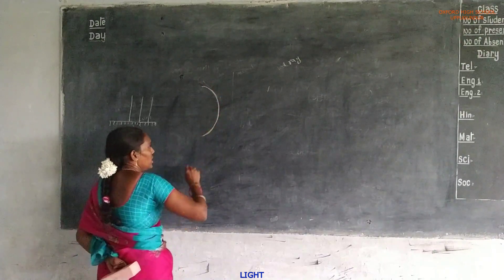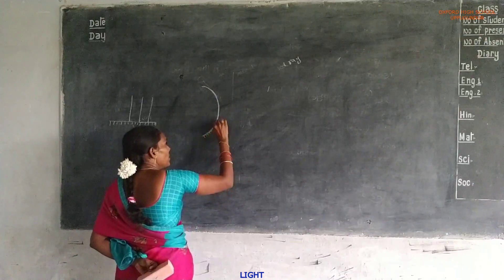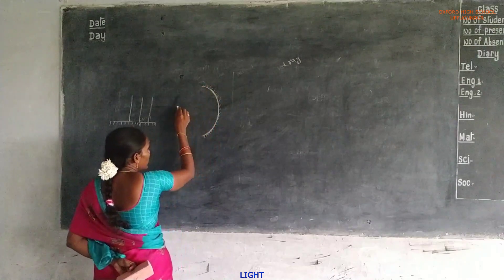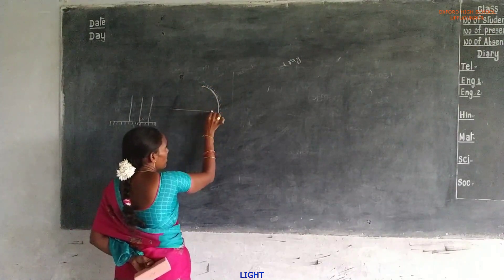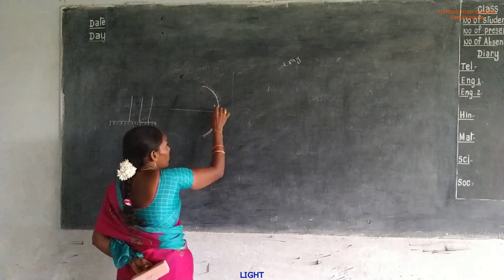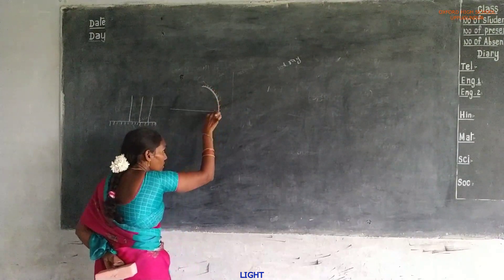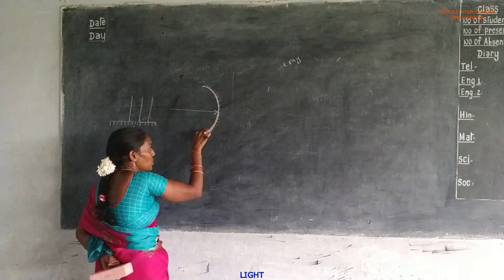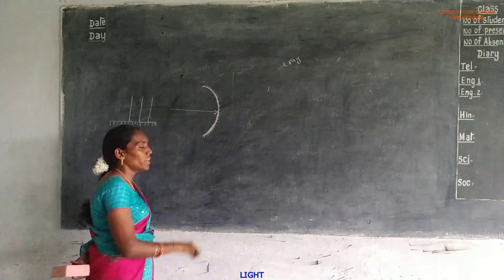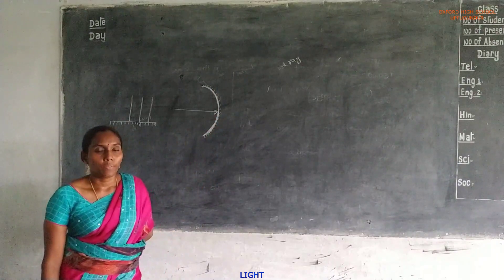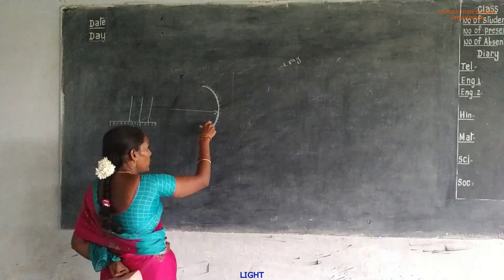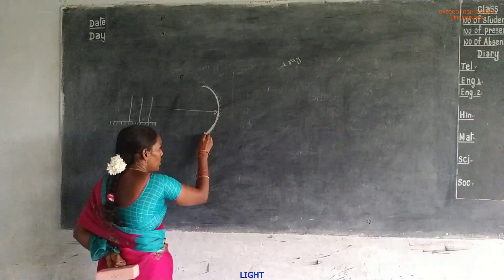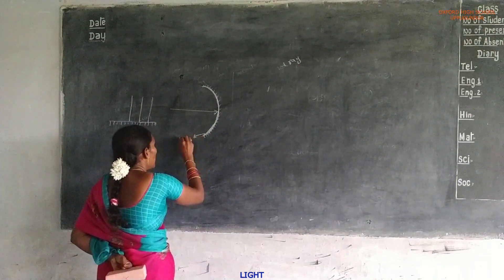Reflection takes place only on the inner side. If the reflecting surface is the inner side or hollow side, this mirror is called a concave mirror.